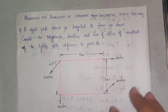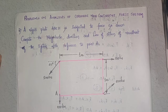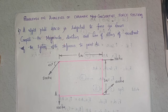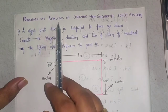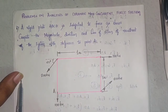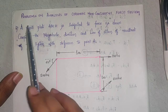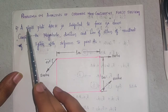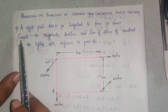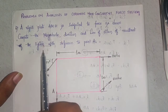Hello students, welcome to the next session of Engineering Mechanics. This is Professor Vidasar Moogie. In this session we'll be taking problems on analysis of coplanar non-concurrent force systems. To begin with, the problem statement says: a rigid plate ABCD is subjected to a force as shown — compute the magnitude, direction, and line of action of the resultant of the system.